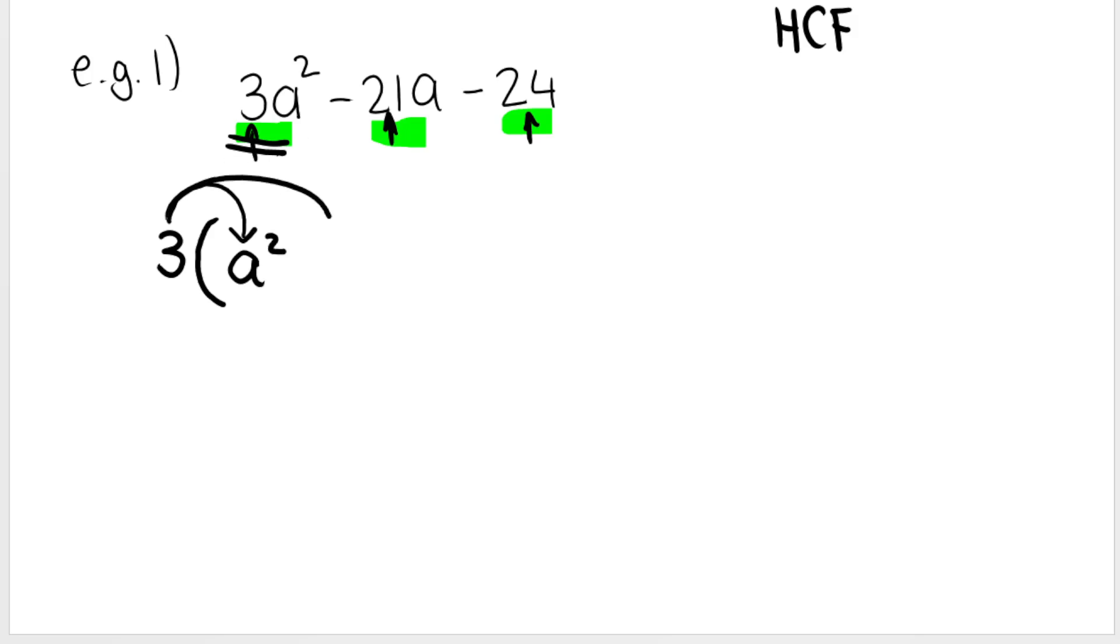I hope you're telling me a squared. Then, what must I multiply 3 by to get negative 21a? I hope you're saying negative 7a. And then last but not least, what must I multiply 3 by to get negative 24? I hope you're saying negative 8.